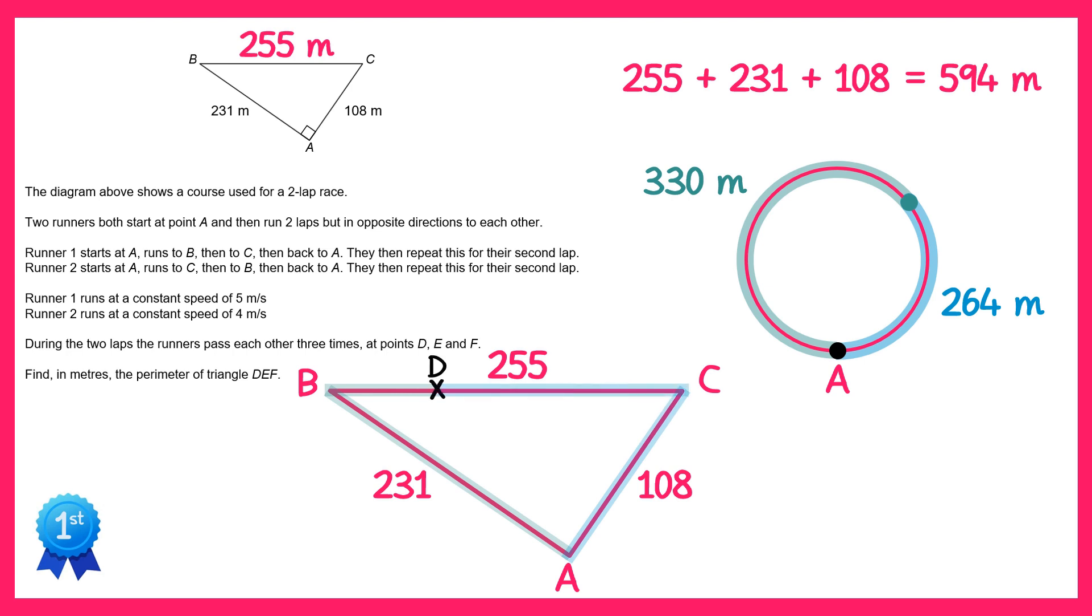Now we know this meeting point here which we'll call D is 5 ninths away around the triangle if you go in a clockwise direction. So if you do 330 take away 231 you find out the extra distance from B to D must be 99 and using a similar one from the other direction you end up with D to C as 156.